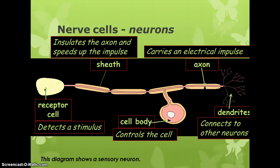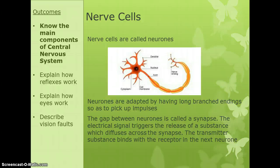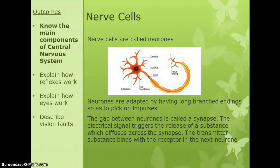You can imagine the electrical signal traveling along the neuron. For the higher paper, neurons are specially adapted: they have large branching endings that allow them to pick up impulses over a large area, and they are also very long, which allows them to transfer signals over a distance.